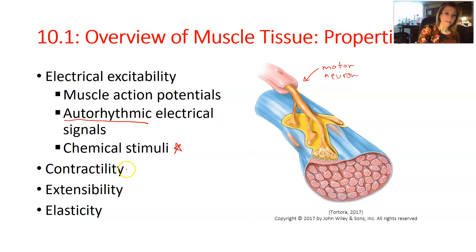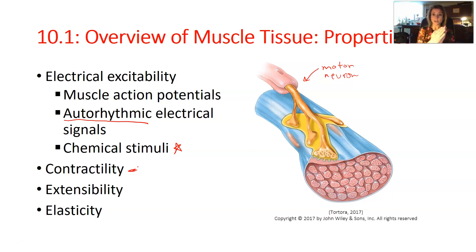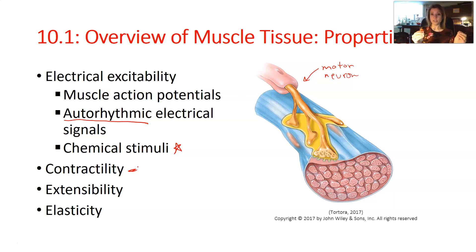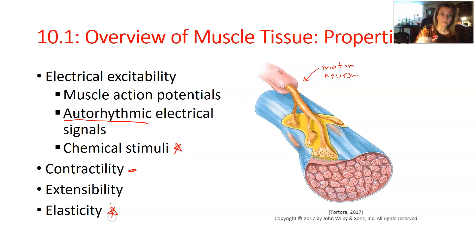Our next property is contractility — muscles are able to shorten, which is contraction, and they're also able to extend, which is extensibility. Through this cycle of contraction and extension, our muscles retain their shape and are not damaged, because they also have the property of elasticity.